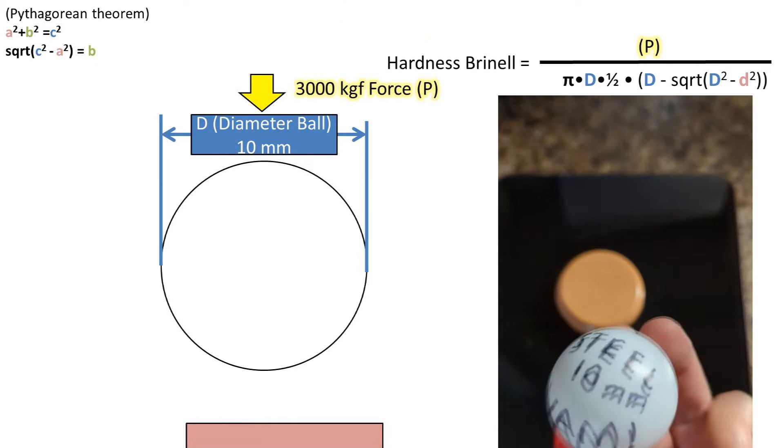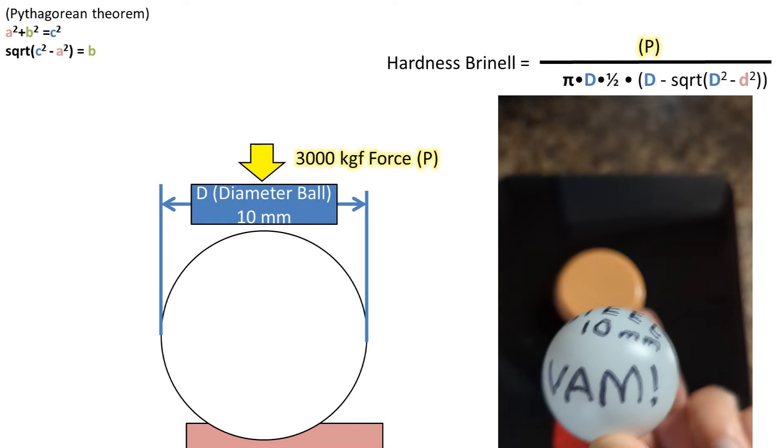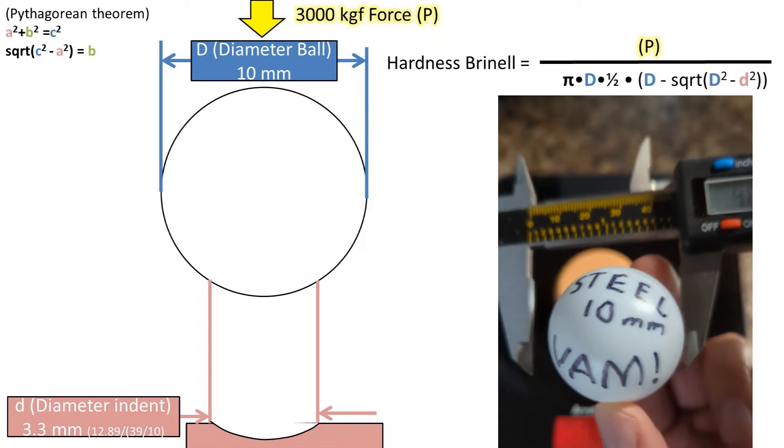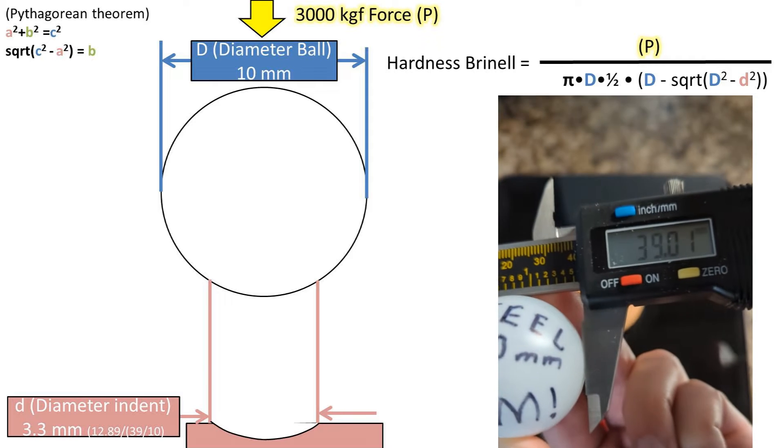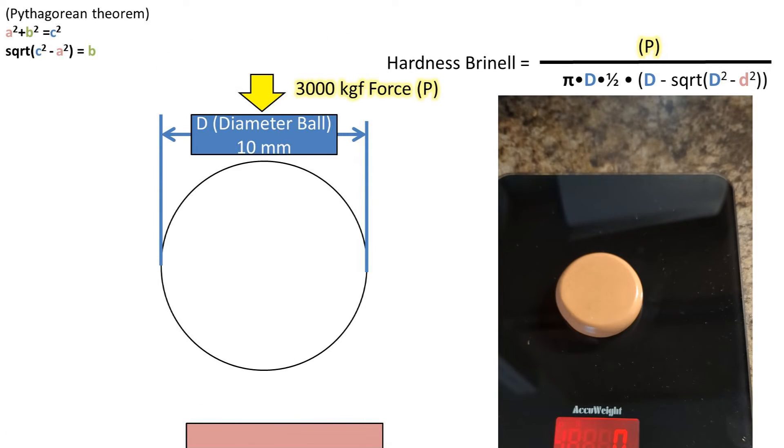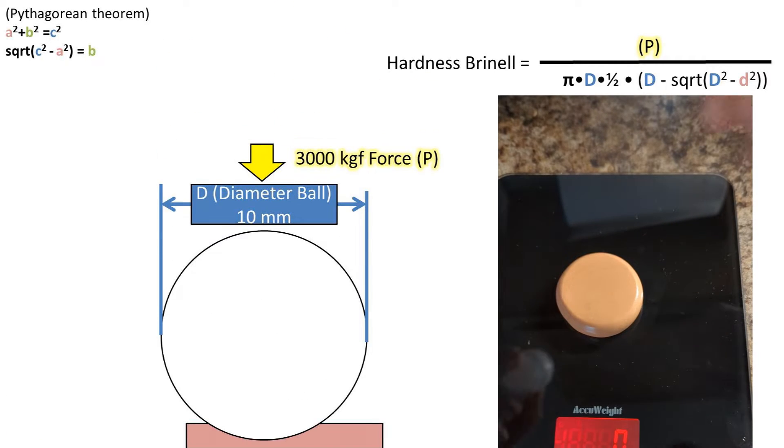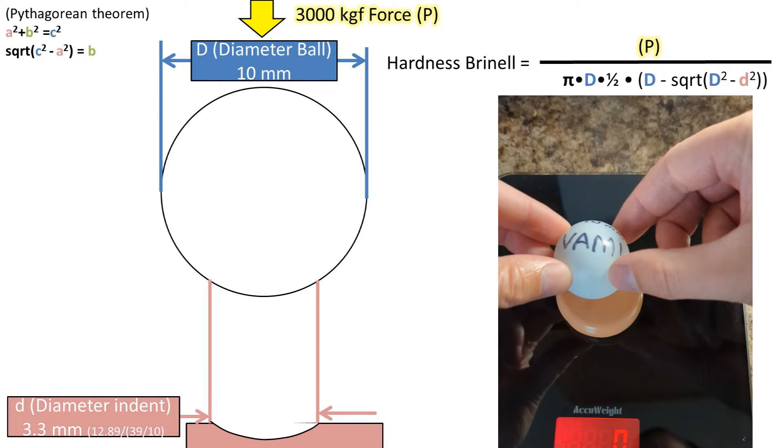Unfortunately I cannot work a hardness testing machine into my budget, so we'll be using a ping pong ball with a diameter of 39 millimeters in our example. I will adjust everything to make it so this ping pong ball has a diameter of 10 millimeters and we'll assume it is made out of steel.